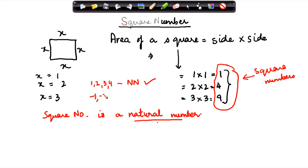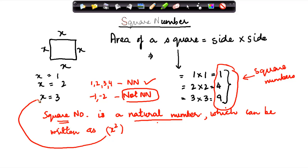Minus 1, minus 2, these are not natural numbers. Hence a square number is a natural number which can be written as x square.